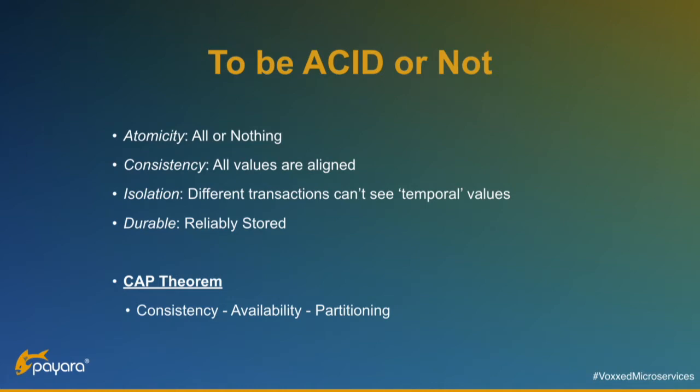Most companies and most people give up consistency, and then you have something called eventual consistency — at a certain point in the future, all data is again nicely aligned. I had a discussion a few weeks ago with someone who said they were giving up availability because consistency was so important to them. But you have to choose one of the two.